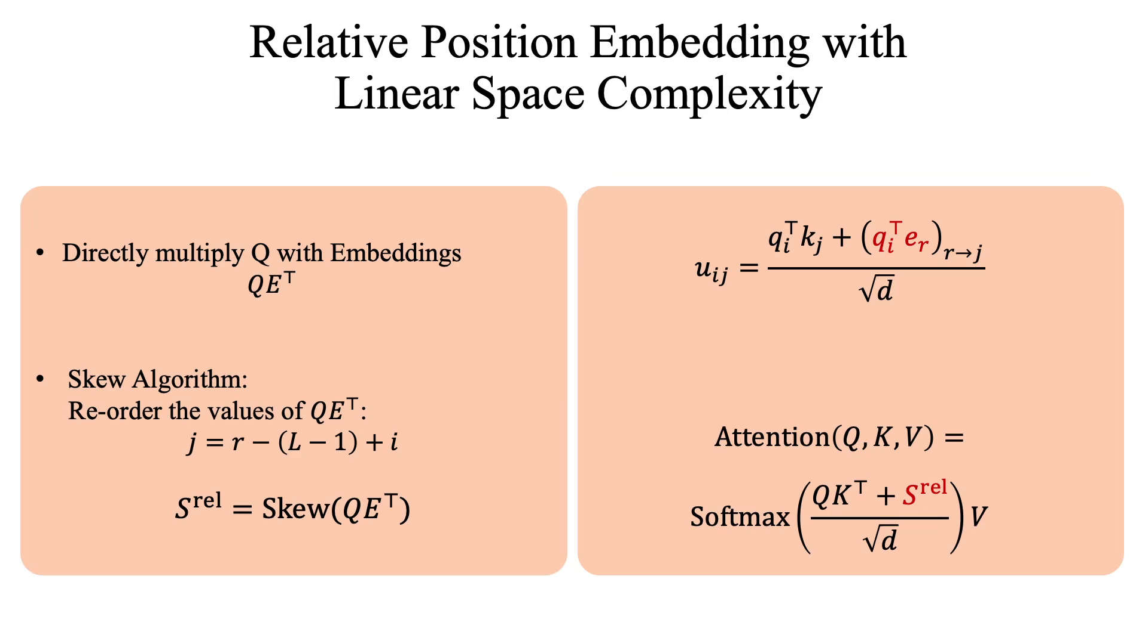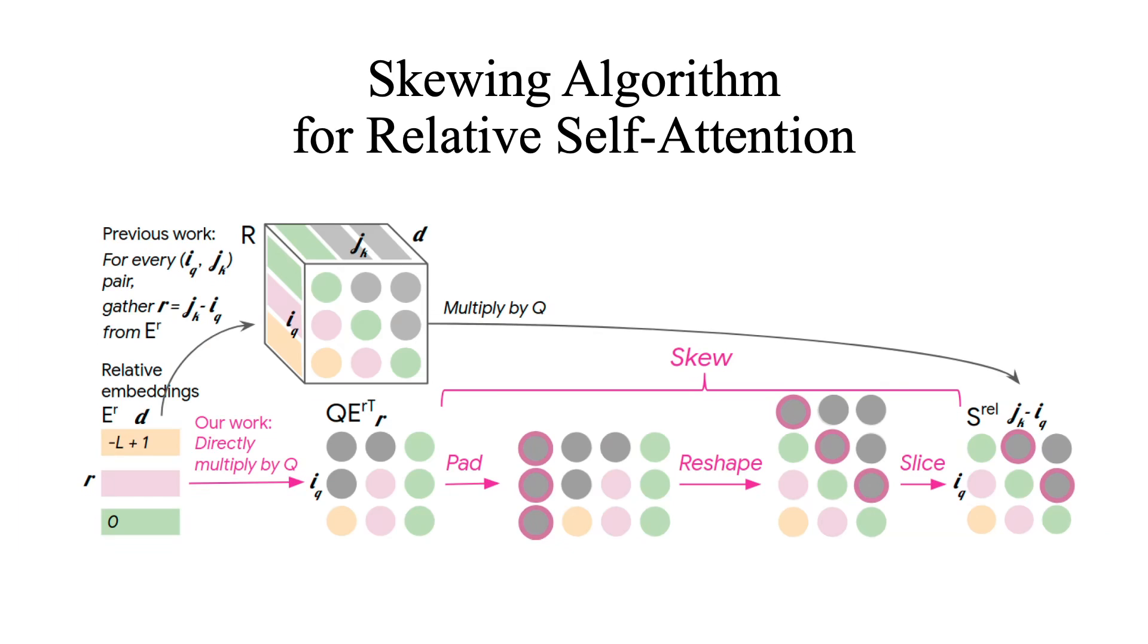In step one, we can directly multiply matrix Q with the embedding matrix E, so that results in an L by L tensor. Then in step two, we adjust the product QE transpose to account for the relative positions. They call this process a skewing algorithm, which reorders the columns according to this equation: j equals r minus L minus 1 plus i.